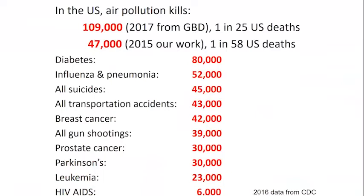To put the numbers in perspective — and this is not just for ozone, but adding ozone and PM2.5 together — this is one way I've come to like communicating the importance of air pollution for premature death. The GBD 2017 results had 109,000 deaths per year in the United States — that's one of every 25 deaths. I've come to talk about air pollution as being as important as all transportation accidents plus all gun shootings in the United States, or we could say prostate cancer plus breast cancer.